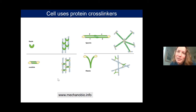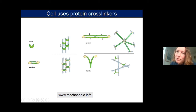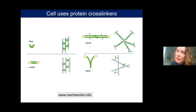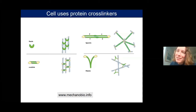Another factor is that crosslinkers like fascin form bundles of actin. Actin bundles become very rigid, moving out of a thermal entropic regime into an athermal response, which also gives a nonlinear response but very different from the isotropic cross-linked case. So there are many subtleties in how crosslinker type shapes network mechanics.